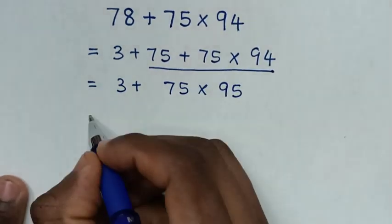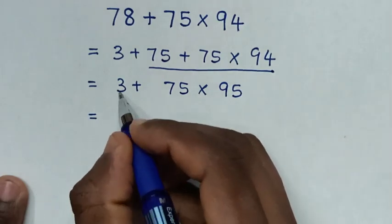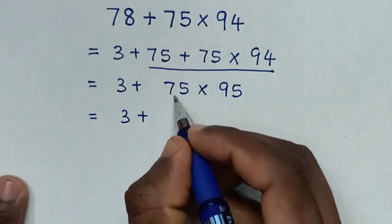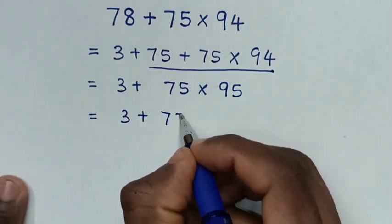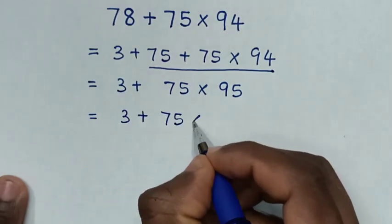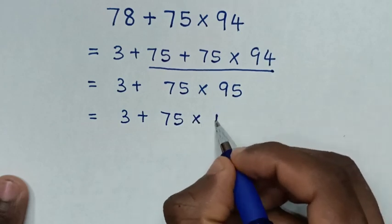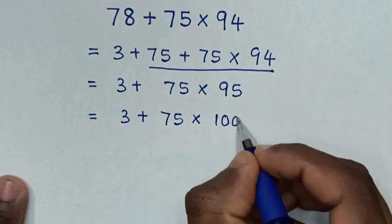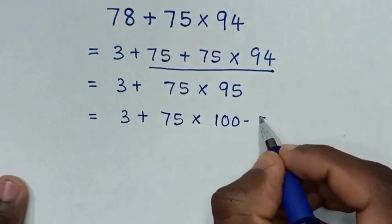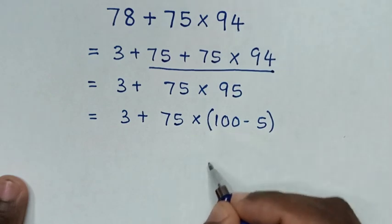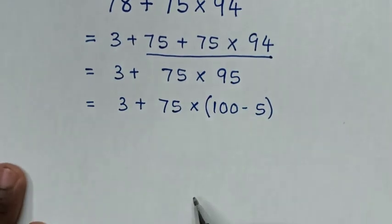Then in the next step it will be equal to 3, then plus 75 times 95, where 95 is the same as 100 minus 5, in brackets.